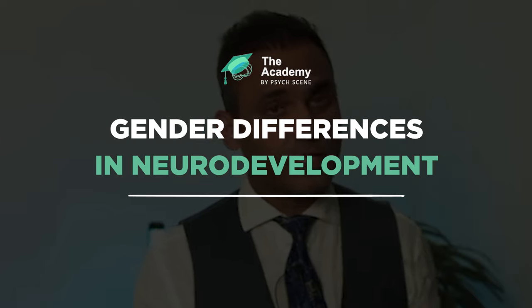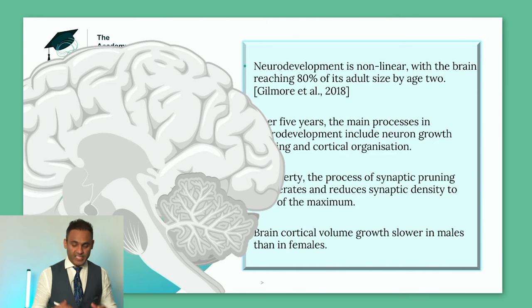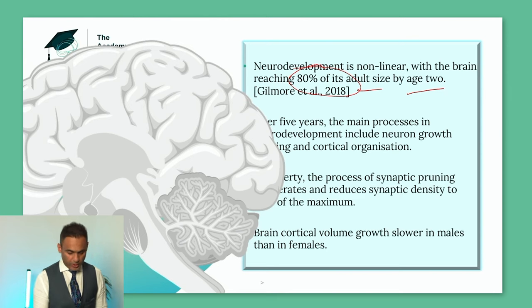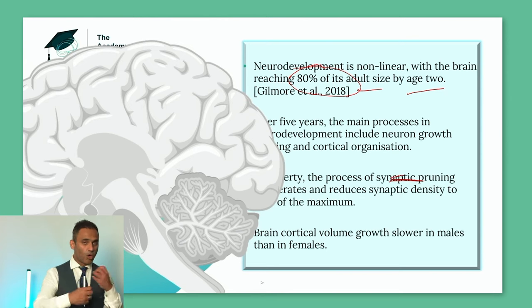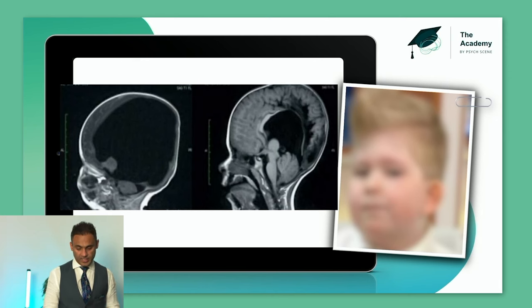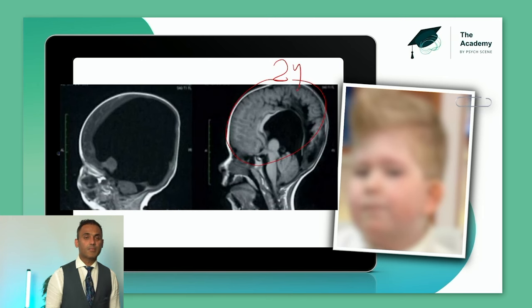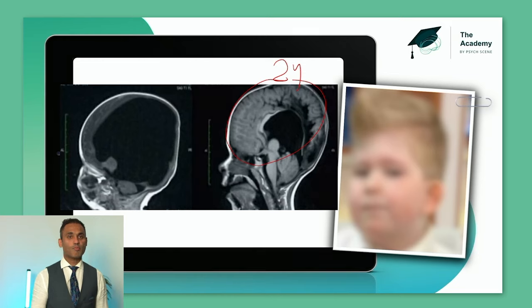We're going to cover gender differences and neurodevelopment as a whole, because with this foundation the diagnostic hierarchy will become easier to apply. Firstly, 80% of the brain reaches adult size by age 2. We know about synaptic pruning — during puberty it's more about pruning and enhancing specific synapses, and this is when neurodevelopmental abnormalities can occur. There's a published case called 'the boy with no brain': on the left at birth, and at exactly age 2, 80% of the brain had grown.